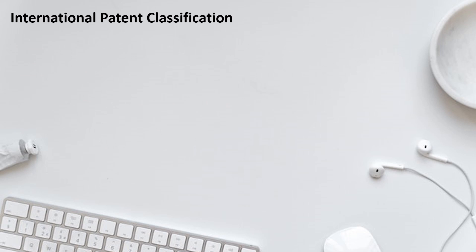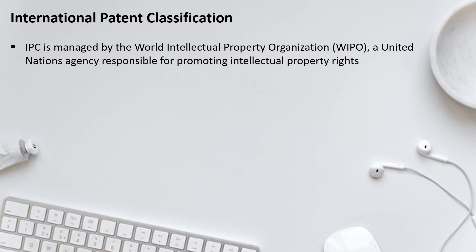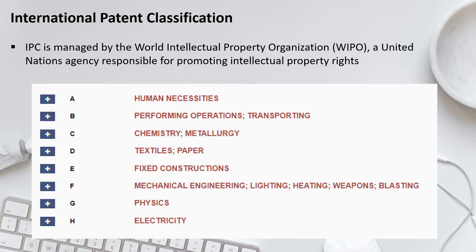The International Patent Classification, commonly known as IPC, is managed by the World Intellectual Property Organization (WIPO), a United Nations agency responsible for promoting intellectual property rights. IPC is a type of patent classification system commonly used throughout the world, managed by WIPO which handles intellectual property internationally. There is an entire hierarchy of classification in IPC.